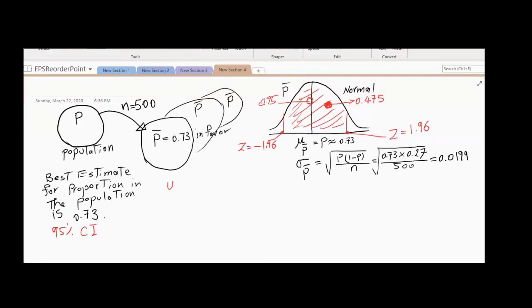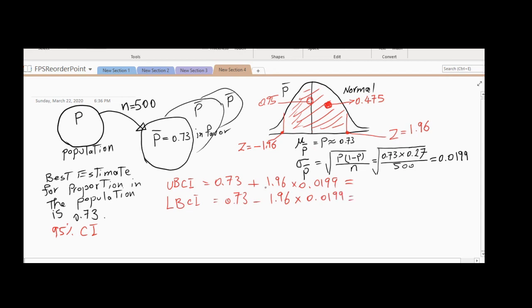We're going to write down the upper bound and lower bound of confidence interval. Upper bound of confidence interval is 0.73 plus 1.96 standard deviations, which is 0.0199. The lower bound of confidence interval is 0.73 minus 1.96 multiplied by 0.0199. Help me. The first one is 0.7690 and the next one is 0.6910.